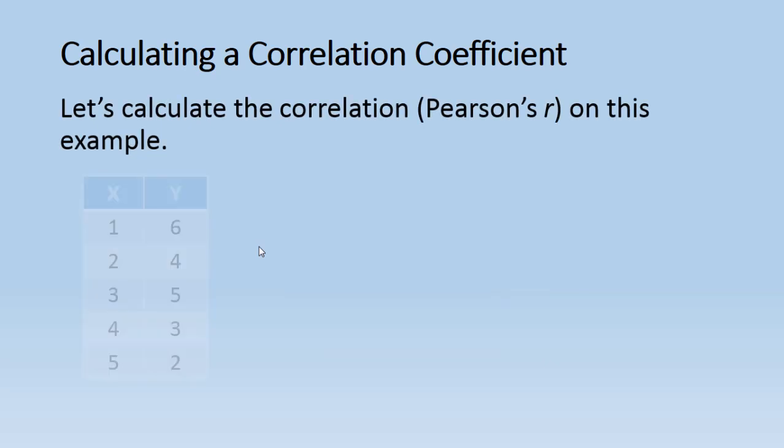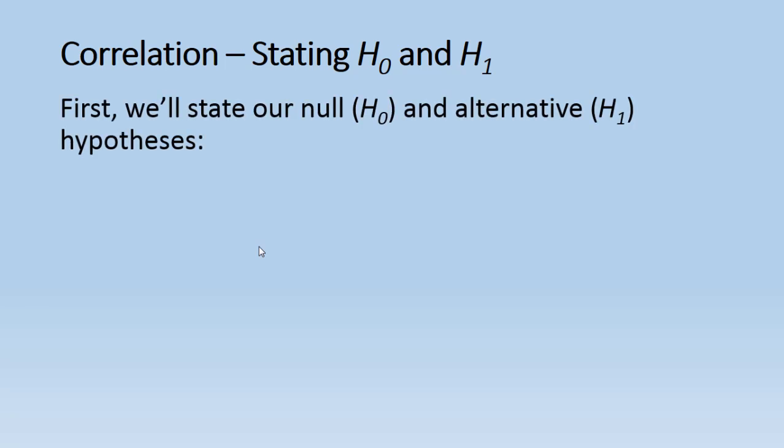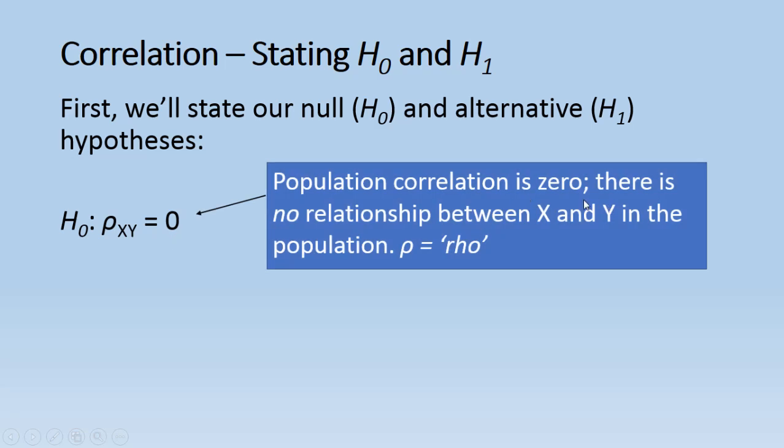So let's go ahead and calculate the correlation or Pearson's r on this example. The first thing we want to do is state our null and alternative hypotheses. So the null hypothesis states—this is called rho here, it's the population correlation. So rho XY equals 0, or in other words, the correlation between X and Y in the population equals 0. And that means that there is no relationship between X and Y in the population.